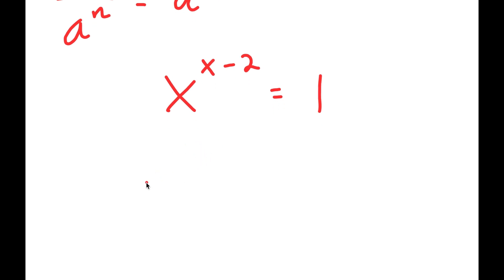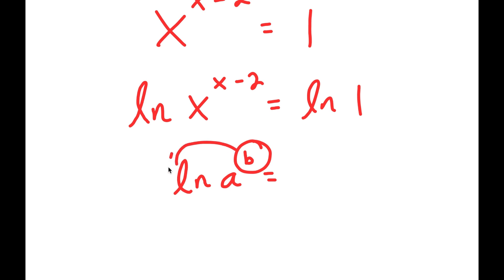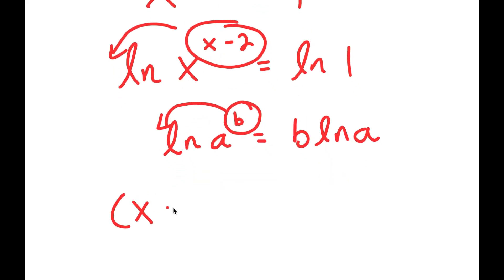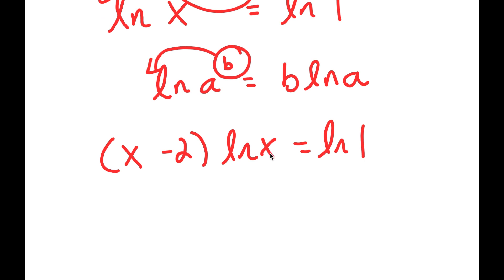Now I can take the ln, or natural log, on both sides. So I have ln of x to the power of x minus 2 is equal to ln of 1. An important property of logarithms is that if I have something in the form ln of a to the power of b, I can move the exponent b to the front — so this equals b times ln a. This is very useful because x is currently an exponent, which makes it hard to solve for. But using this property, I can move it to the front, making it an actual term that's much easier to solve. So I get x minus 2 times ln x is equal to ln 1. And ln of 1 is equal to 0.